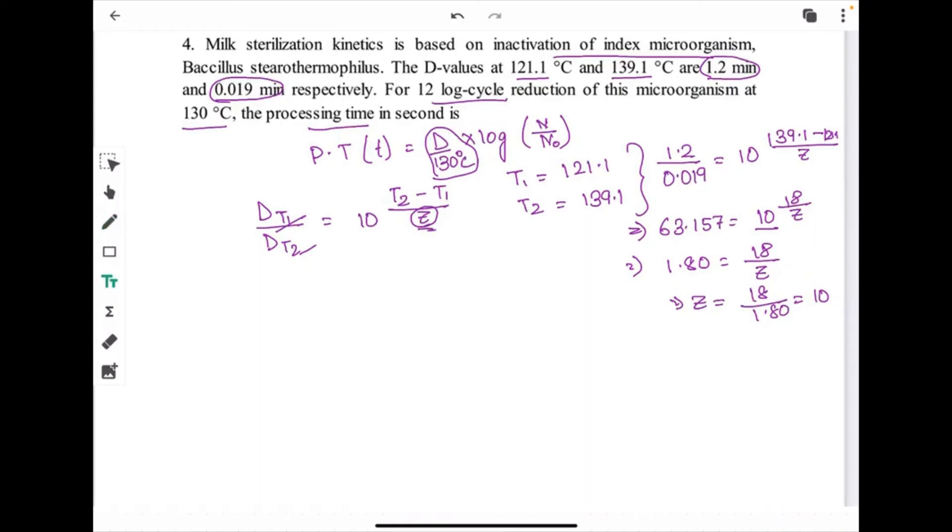Now in this case we will take T1 as 130 degree Celsius and T2 as 139.1. D 130 degree Celsius equals D_T2, that is 0.019, into 10 to the power (139.1 minus 130) divided by 10. 0.019 into this one will be 10 to the power 0.91. What we will get: 0.154 minute.